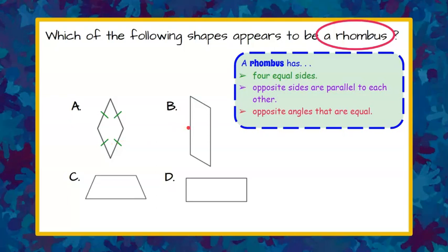In choice B, those are not four equal sides. We can clearly see that these parallel sides are longer than these parallel sides. So I'm going to rule out B.